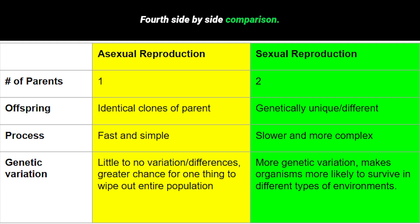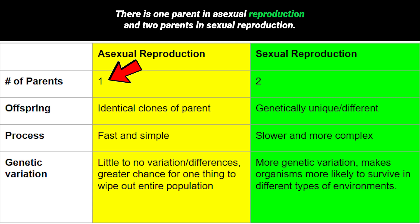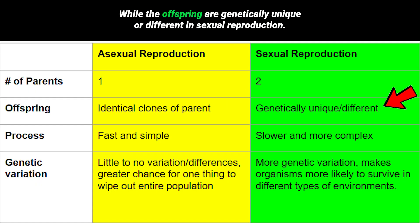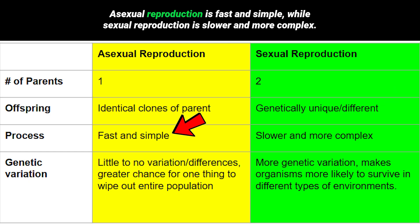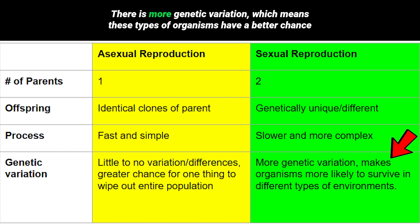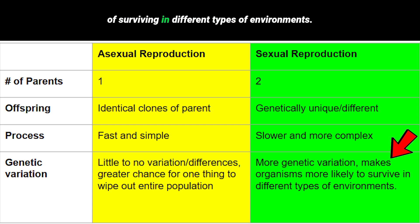Part 4: Side-by-side comparison. Asexual reproduction has one parent; sexual reproduction has two. Offspring are identical clones in asexual reproduction, while offspring are genetically unique in sexual reproduction. Asexual reproduction is fast and simple, while sexual reproduction is slower and more complex. With no genetic variation in asexual reproduction, one event could wipe out an entire population, but sexual reproduction provides more genetic variation, giving organisms a better chance of surviving in different environments.